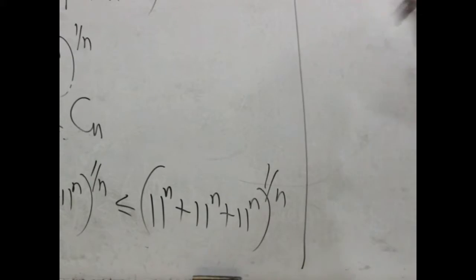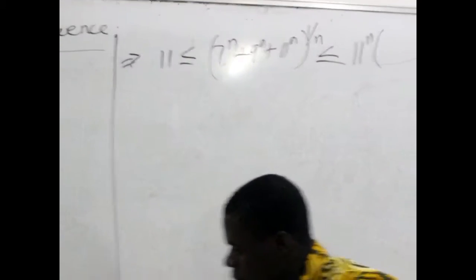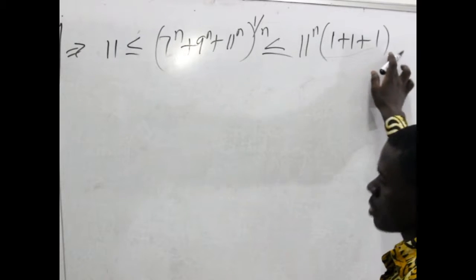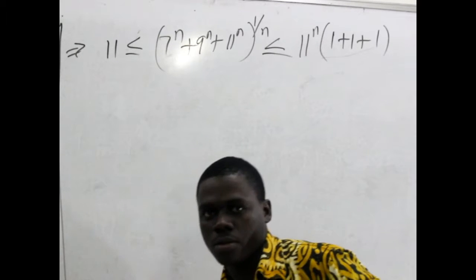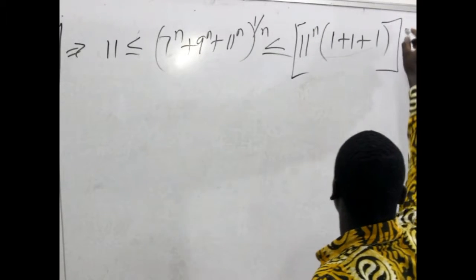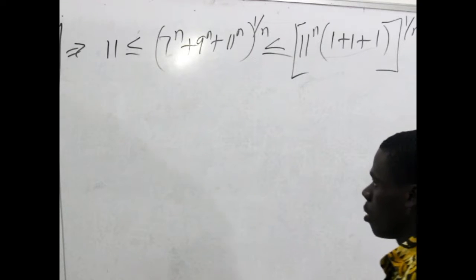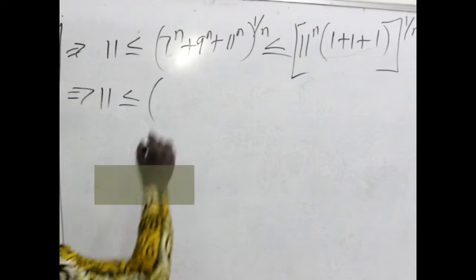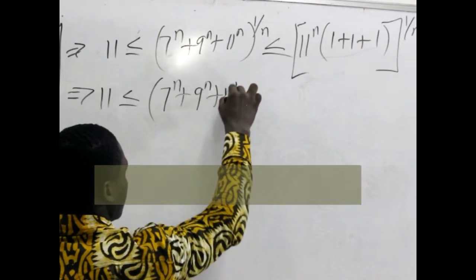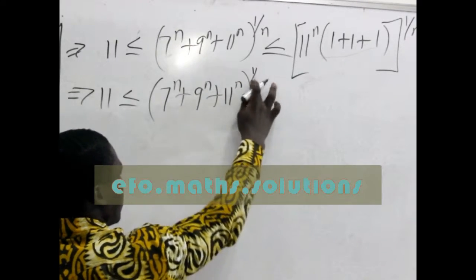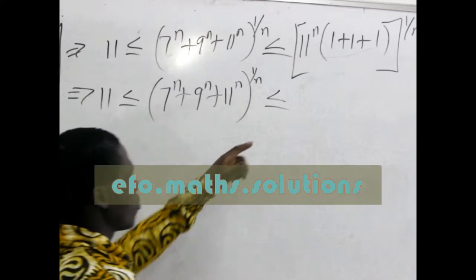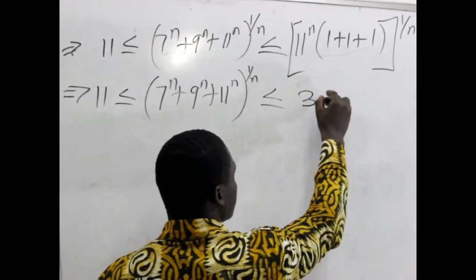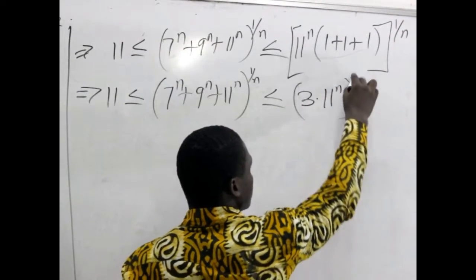Expanding the bracket: 1 plus 1 plus 1 is 3. So we have 11 less than or equal to 7^n + 9^n + 11^n all to the power 1 over n, less than or equal to 3 times 11^n to the power 1 over n. When we distribute the 1 over n power, this gives 11 multiplied by 3 raised to the power 1 over n.